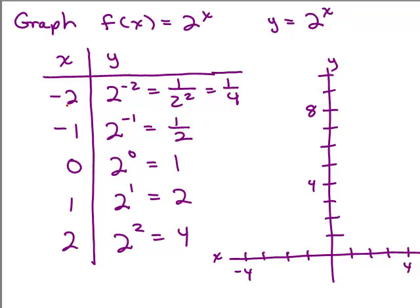So let's do this. We've got the ordered pairs negative 2, 1 fourth. Well, I don't know, that's about right here, approximately. We've got negative 1, 1 half, so negative 1 and then up 1 half. We've got the point 0, 1. And we've got the point 1, 2. We've got the point 2, 4.